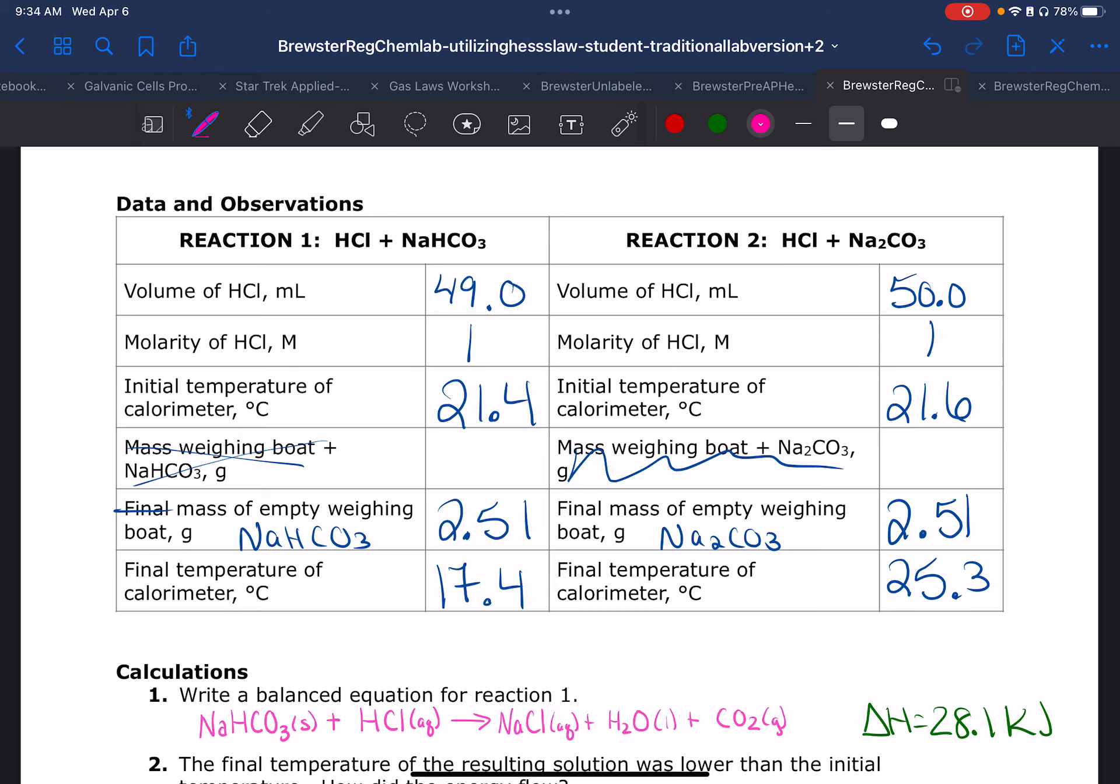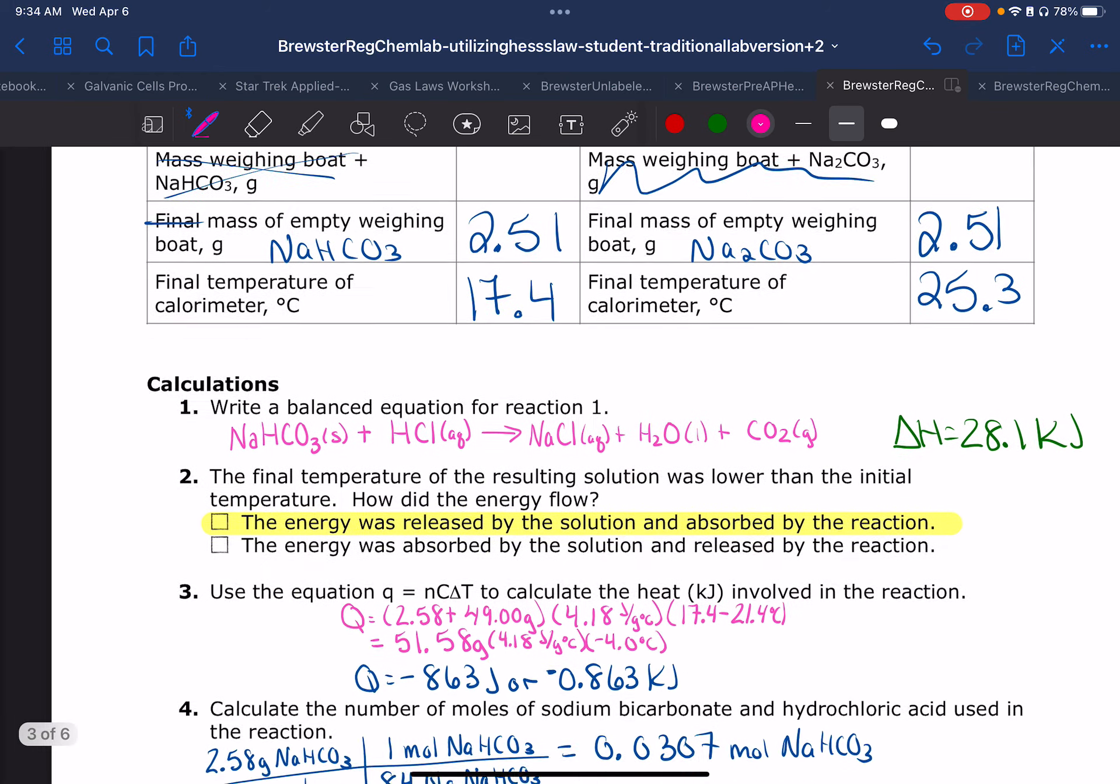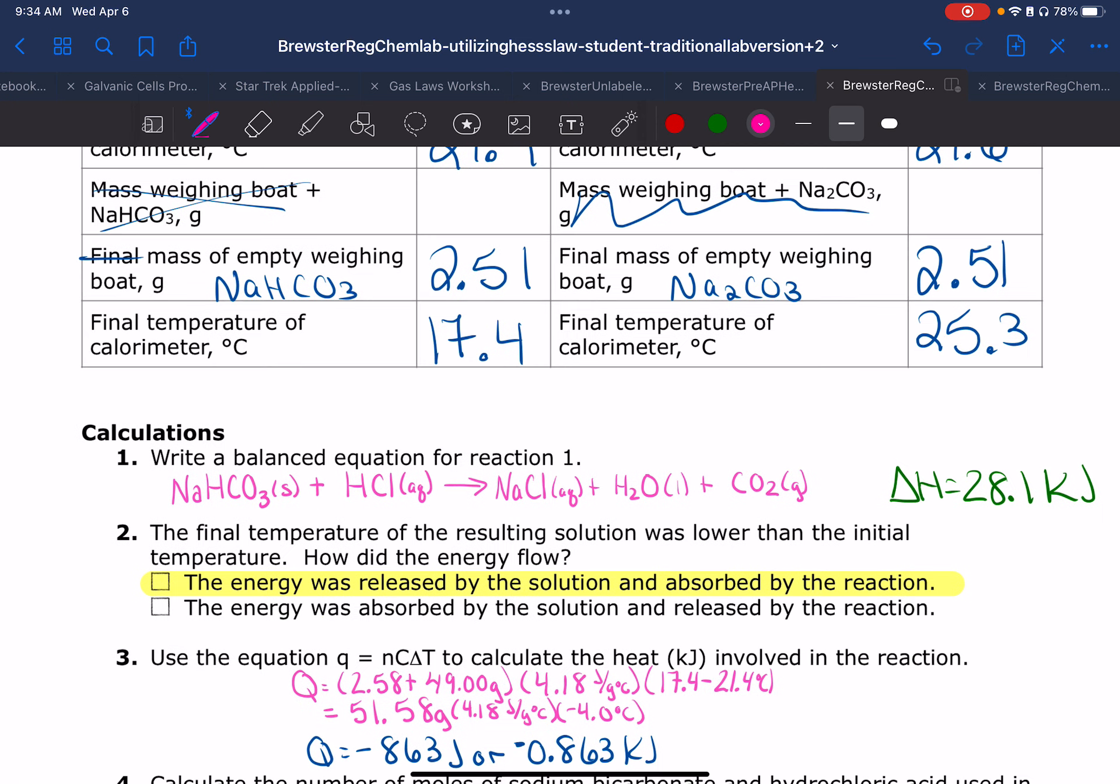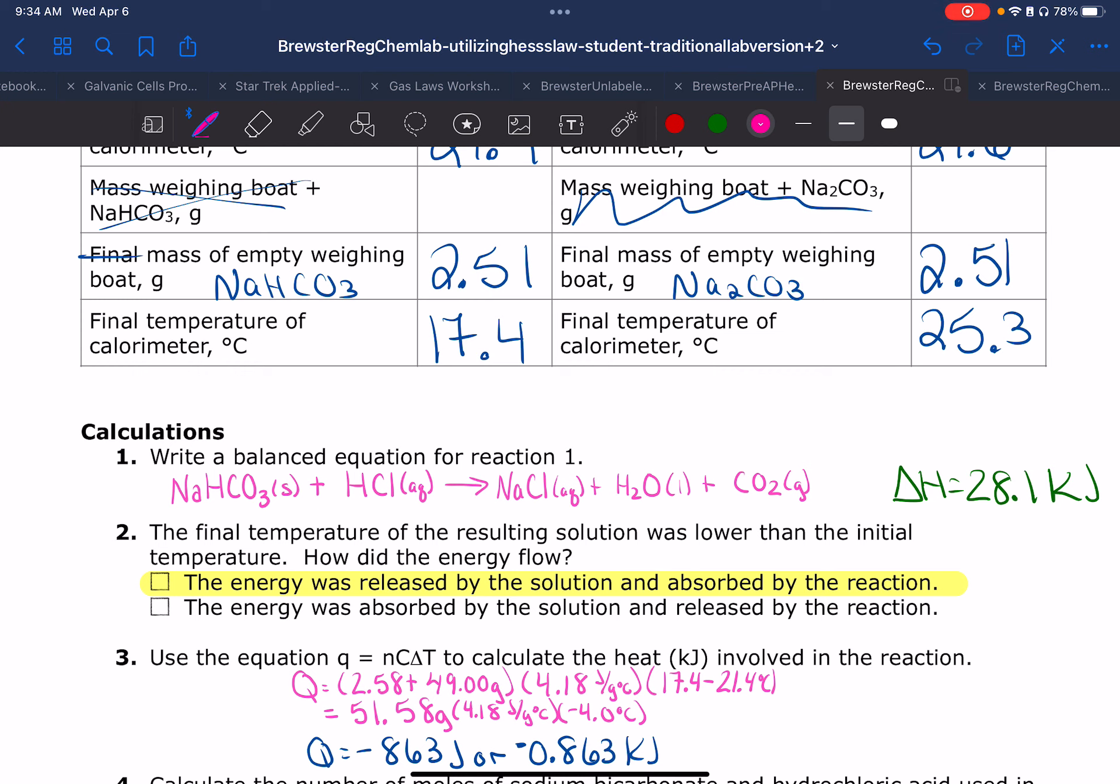Question one: here's our balanced equation. NaHCO3 solid - you've got to put the states of matter on here - plus HCl yields NaCl plus H2O plus CO2. I'll show you how I got the green number. Since we have a reaction that's endothermic, then the reaction has energy that's released by the solution and absorbed by the reaction. That's why I got colder.